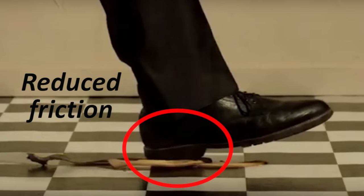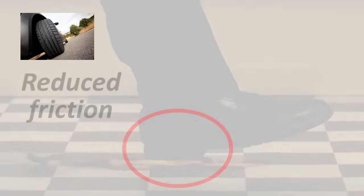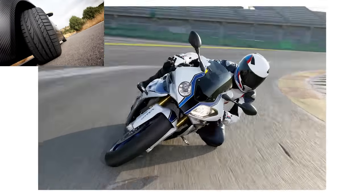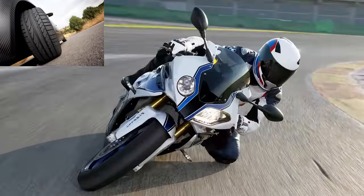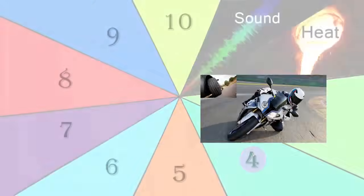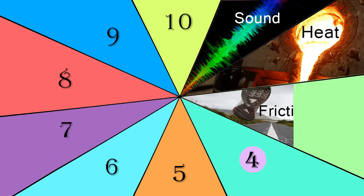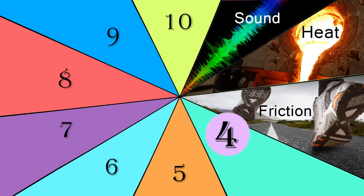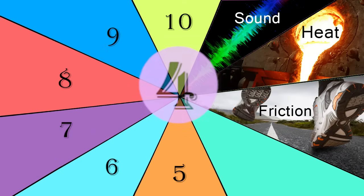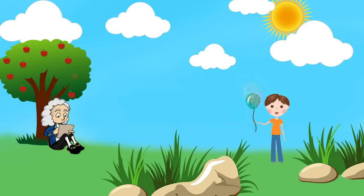Friction, which is an important factor in the making of tires, is also explained by physics.